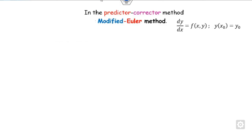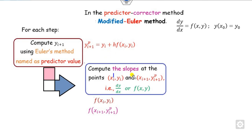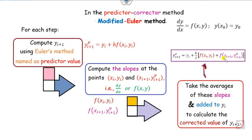There are three steps to construct this table. First, we apply the Euler method to get the predicted value: y_{i+1}^p = y_i + h·f(x_i, y_i). Then we compute the slopes at x_i and at x_{i+1} using y_{i+1}^p. Since dy/dx = f(x, y), we can evaluate the slope at both points. Finally, we take the average of the slopes, (f(x_i) + f(x_{i+1}))/2, multiplied by the step size h, and add it to y_i.